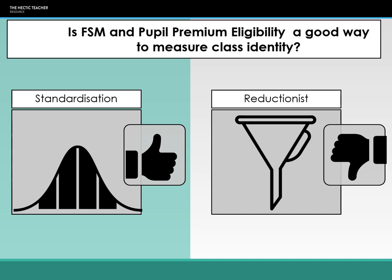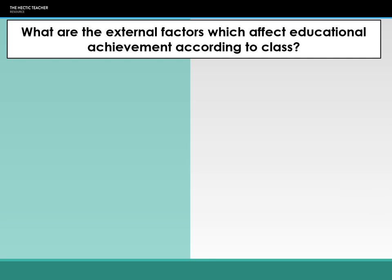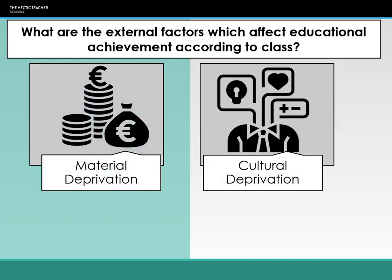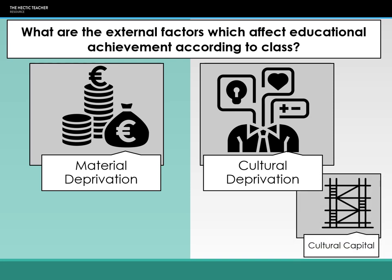External factors are any of the factors which are outside of the education system — influences on educational achievement that don't come from the education system itself. When looking at external factors in educational achievement according to class, they can be grouped into three main areas: first, material deprivation; then cultural deprivation; and finally cultural capital, which links into cultural deprivation but is also slightly distinct from it.